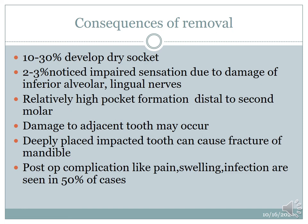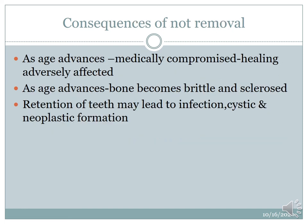What are the consequences of removal? 10% to 30% develop dry socket; 2% to 3% notice inferior alveolar nerve sensation damage. There is relatively high pocket formation if the incision is not properly placed. Damage to the adjacent tooth may occur. Deeply placed impacted tooth can cause fracture of the mandible if excessive bone removal is needed to access the tooth. Postoperative complications like pain, swelling, and infection are seen in 50% of cases. As age advances, healing is adversely affected. Bone becomes brittle and sclerosed, and retention of teeth may lead to infection, cyst, or neoplasm formation.